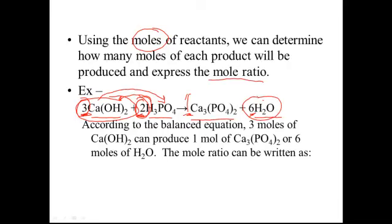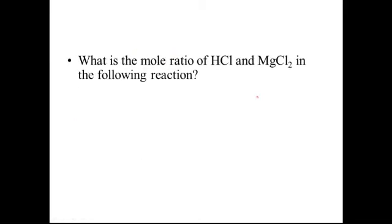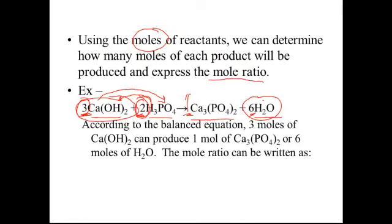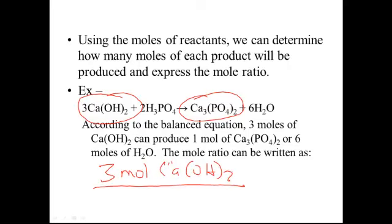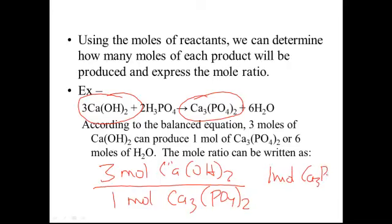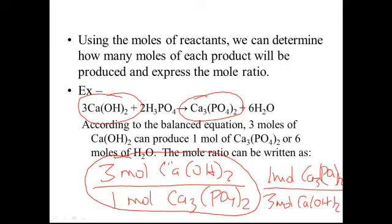We can compare any two parts of that chemical reaction. For example, comparing calcium hydroxide to calcium phosphate: for every three moles of calcium hydroxide, we get one mole of calcium phosphate. Or we could write it the other way: one mole of calcium phosphate on top and three moles of Ca(OH)₂ on the bottom. This is what's called a mole ratio — using the coefficients in the balanced equation to compare the moles of one part of the reaction to the moles of another part.